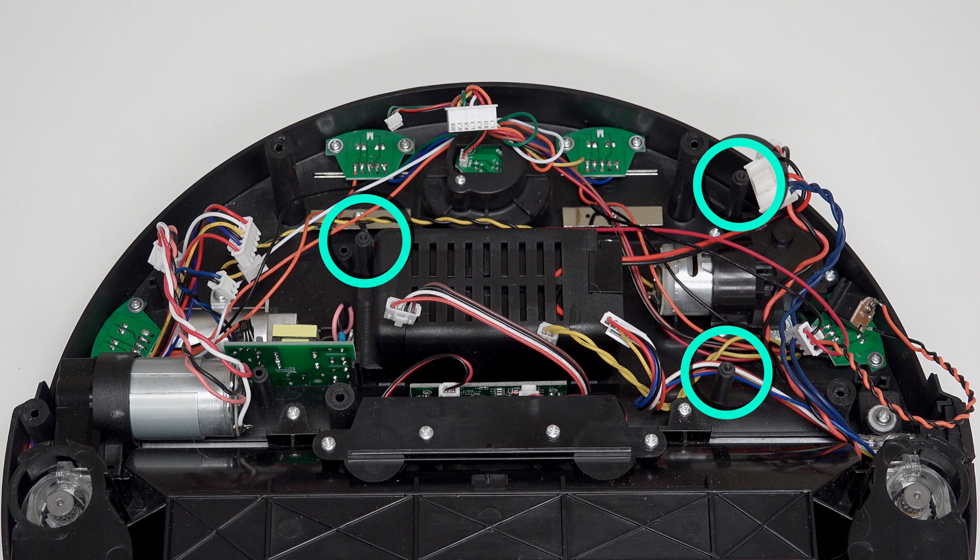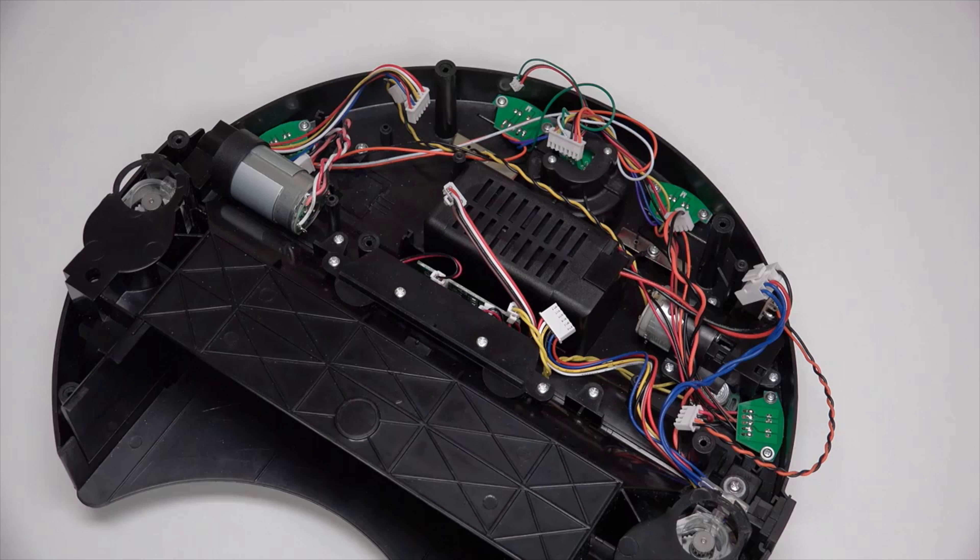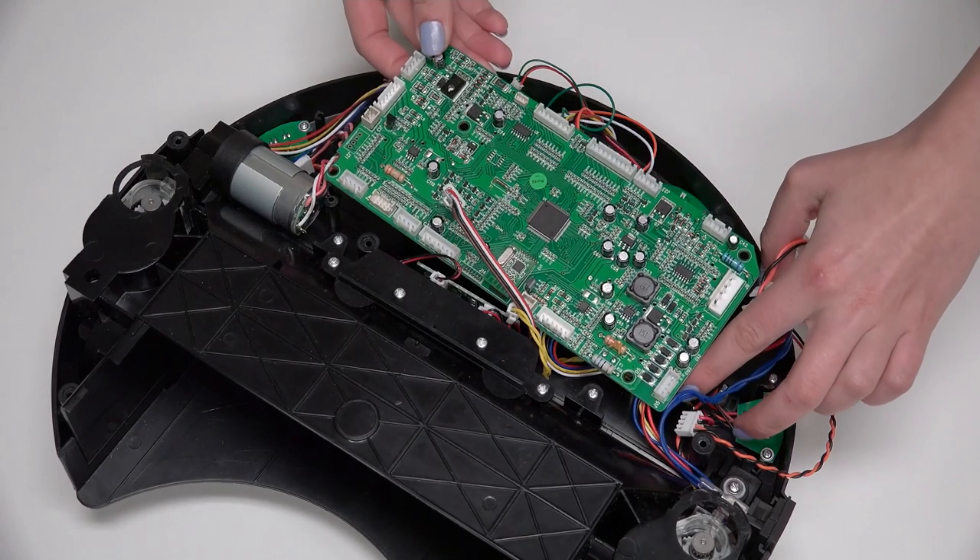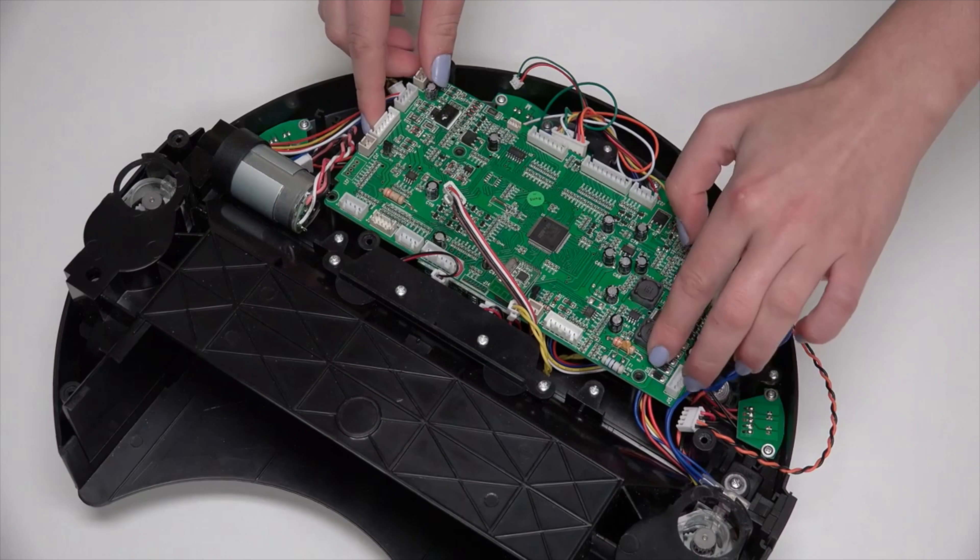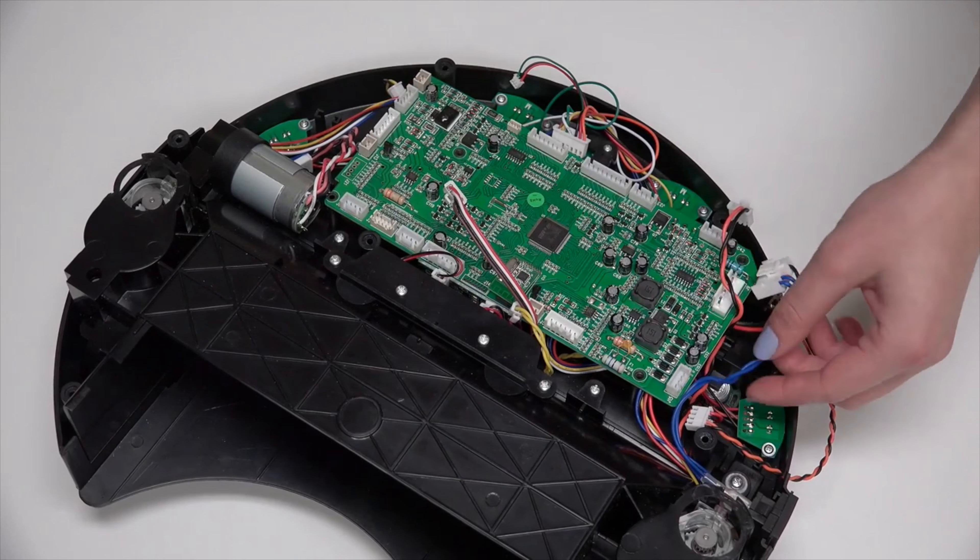Align the holes in the mainboard with the three screw posts on Bob's interior. Ensure that the mainboard sits flat before reinstalling the three screws.